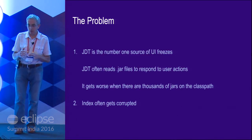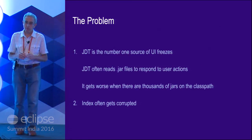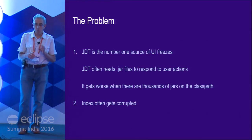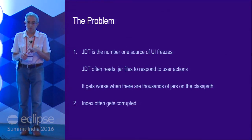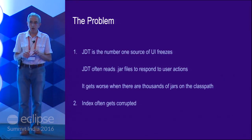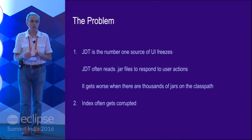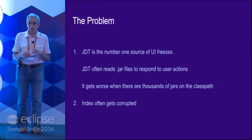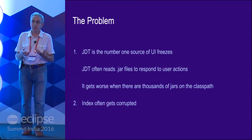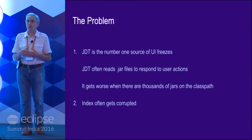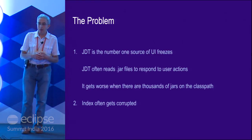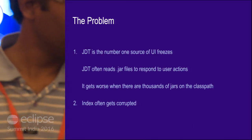So what we saw in the pattern of these freezes is that although many places in Eclipse contribute, JDT is the number one source. And among sources that can be attributed to JDT, the majority of the freezes are related to reading of jar files. When there are libraries on the class path, they have to be read so the IDE can understand the code that the source code depends upon. But each jar file reading is not particularly fast.